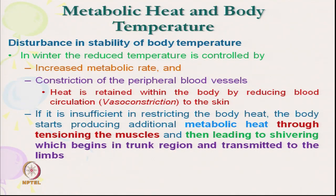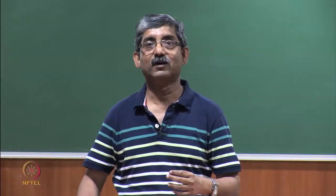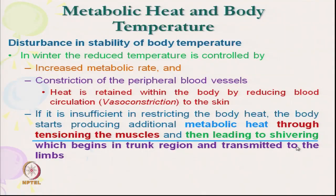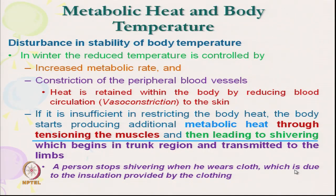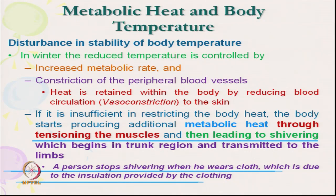If vasoconstriction is insufficient, the body starts another physiological phenomenon called shivering — by tensioning the muscles. A person can be comfortable if we stop releasing heat by wrapping the clothing. If one layer of clothing is not enough, we keep increasing layers. Shivering is the extreme condition where body physiology is not able to retain body heat. A person stops shivering when he wears clothing, due to the insulation it provides.